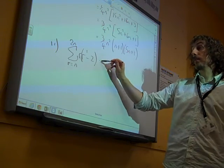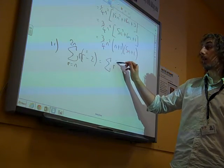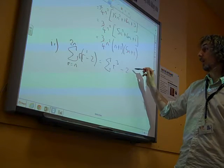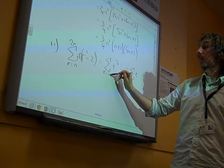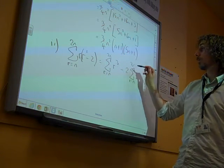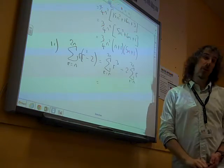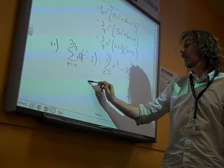So the first bit, actually many of you did this right at multiplying it out and recognizing it as R cubed minus twice the sum of R, as R goes from N to 2N. But then a few of us made the same mistake again.